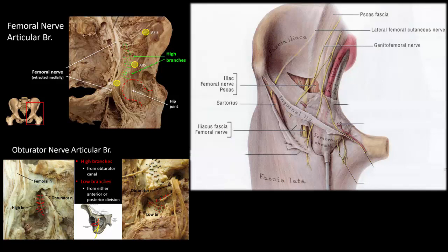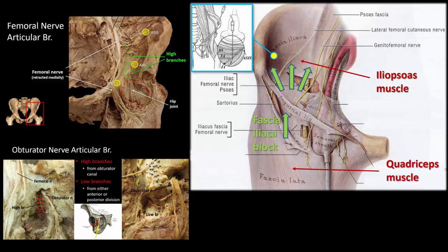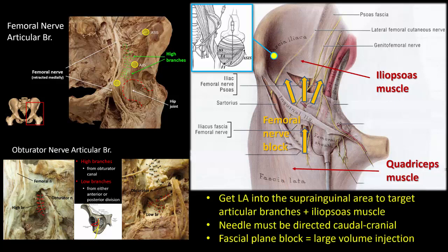First, we need to target the articular branches of the femoral nerve and ideally also the obturator nerve, as well as the branches of the femoral nerve innervating the femoral shaft and the muscles that may be injured or in spasm — the iliopsoas muscle and the quadriceps. To do this most effectively, we must aim to get local anesthetic spread superior to the inguinal ligament and into the pelvic area. We could use a suprainguinal skin puncture site, but if we're using an infrainguinal approach to either the femoral or fascia iliaca block, then we must direct our needle from caudal to cranial. Second, we must inject a high volume of local anesthetic into the suprainguinal location to maximize the chance of reaching all the relevant nerves. These are the same principles that I use when placing a catheter, always aiming to thread it cranially so that the tip ends up in a suprainguinal location.